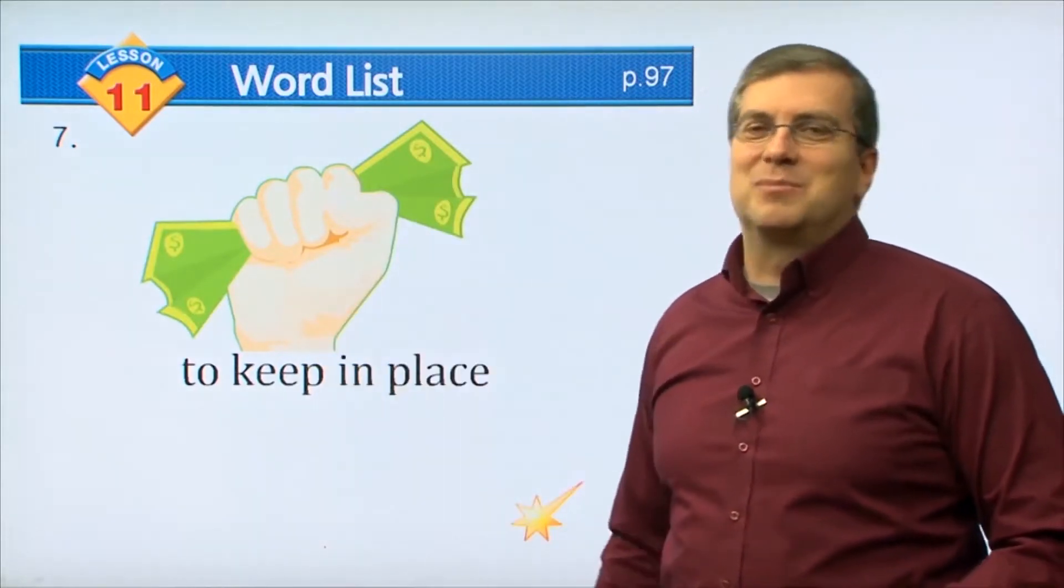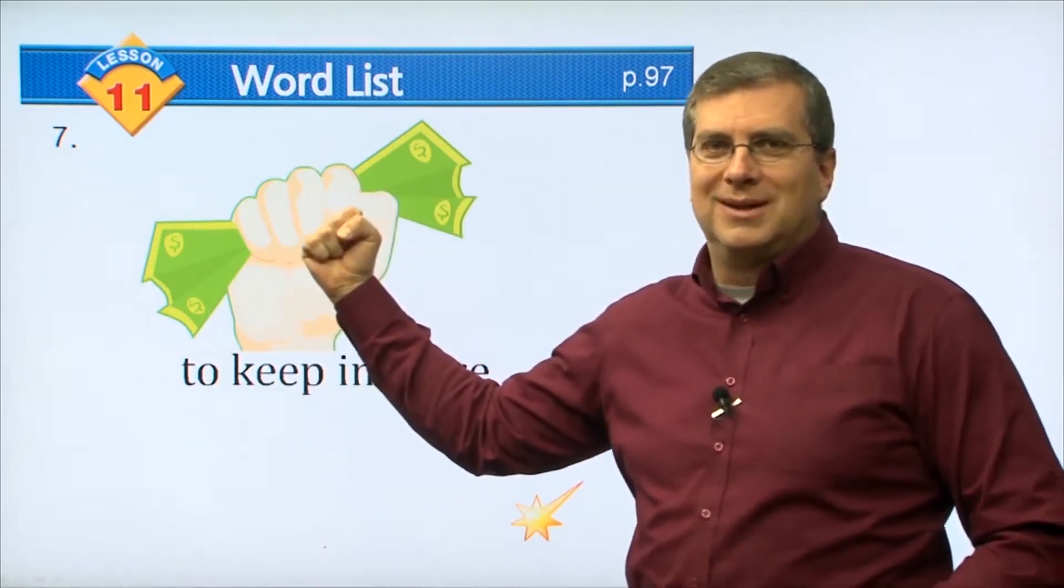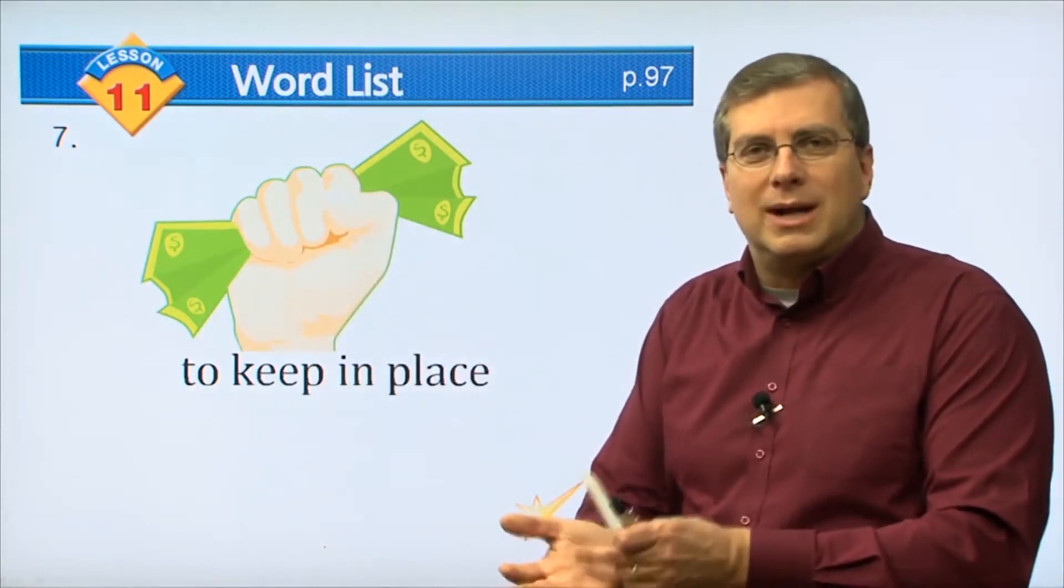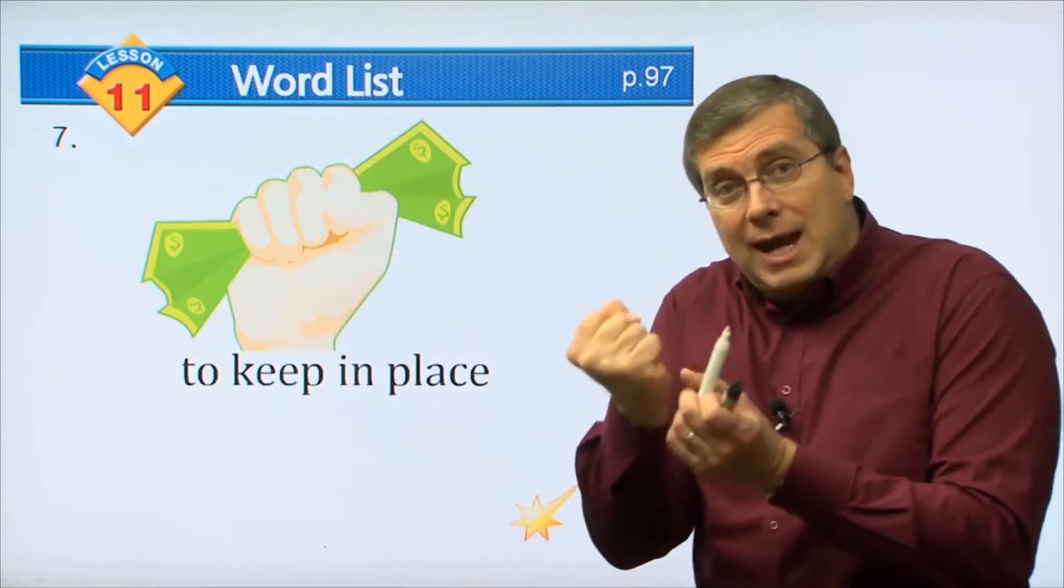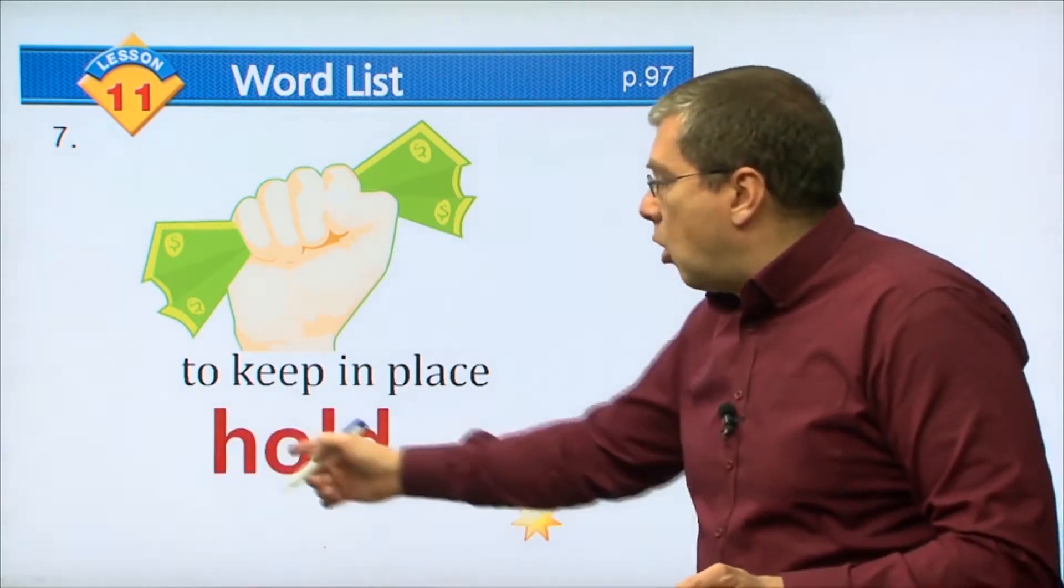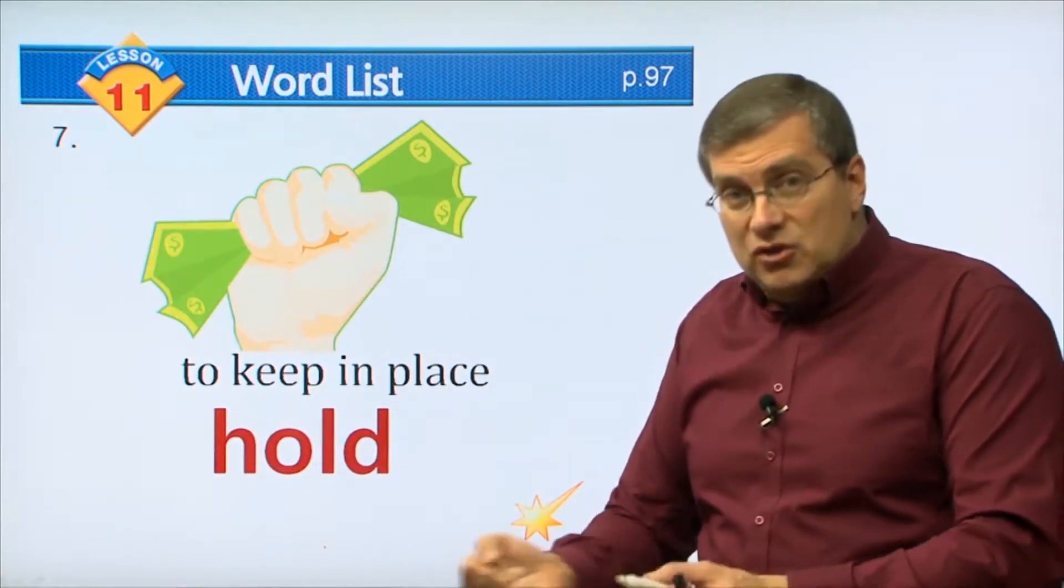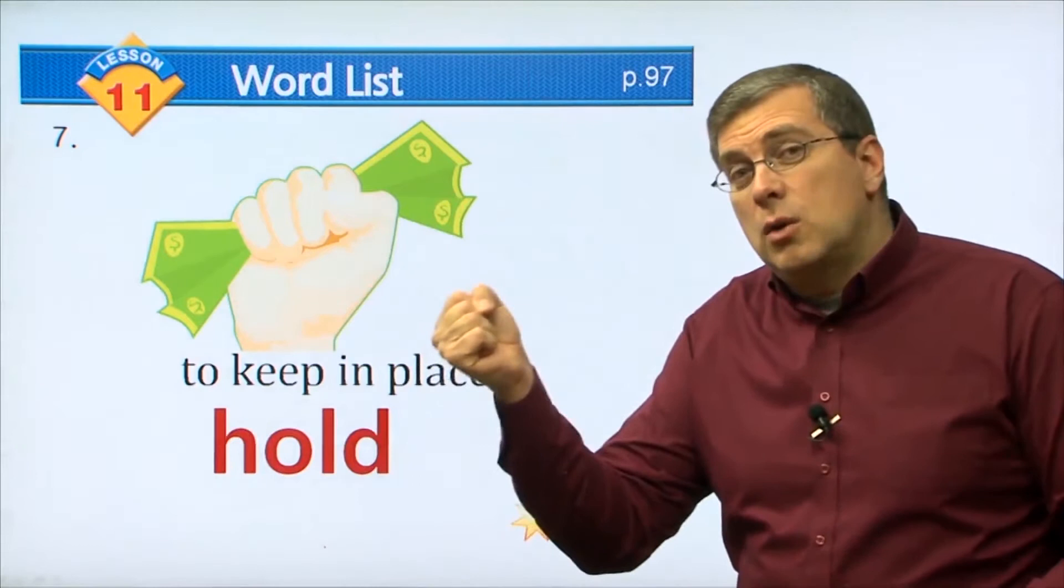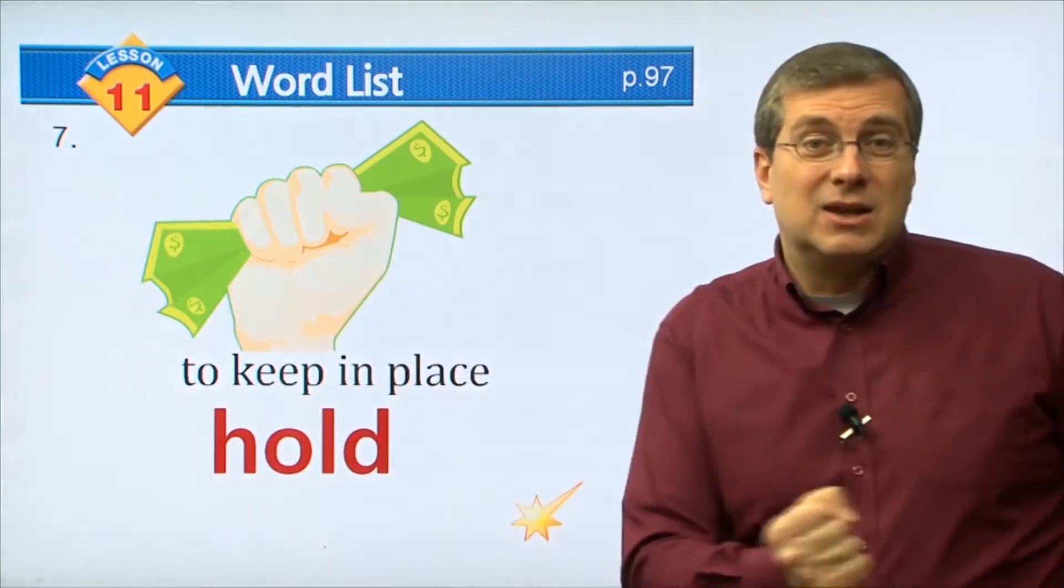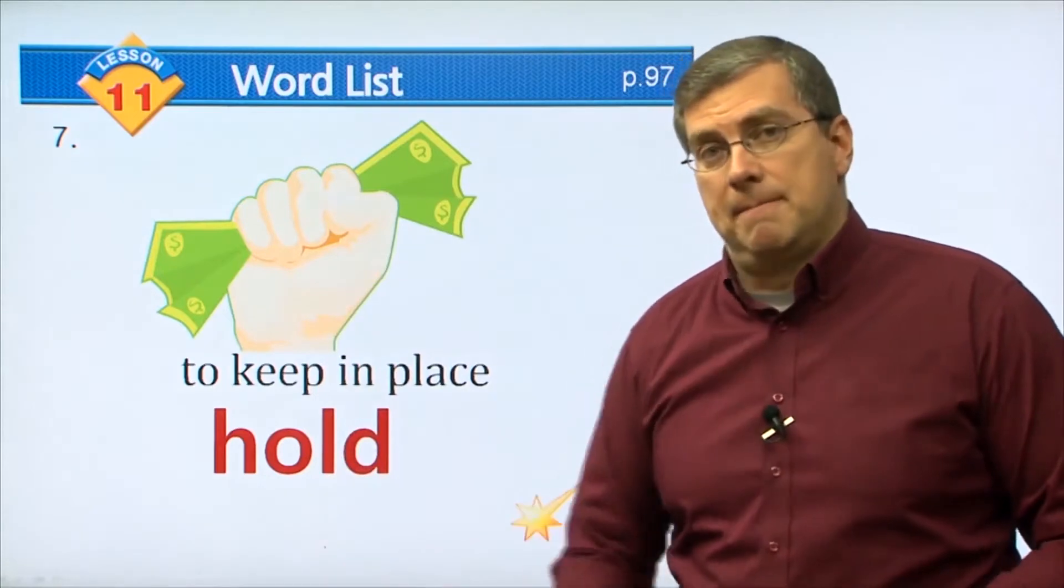Next word, number seven: to keep in place. This is an interesting picture - somebody has a strong grip on their money because it's very important. What are they doing? If you have money in your hand, you don't want to lose it. You put it in your hand, you close your fingers around it. What are you doing? That verb is hold. You are holding your money. Also, when you go on a busy street, hold your mother's hand, hold your father's hand because you don't want to get in the street - it could be dangerous. Hold your brother's hand or your sister's hand to take care of them.